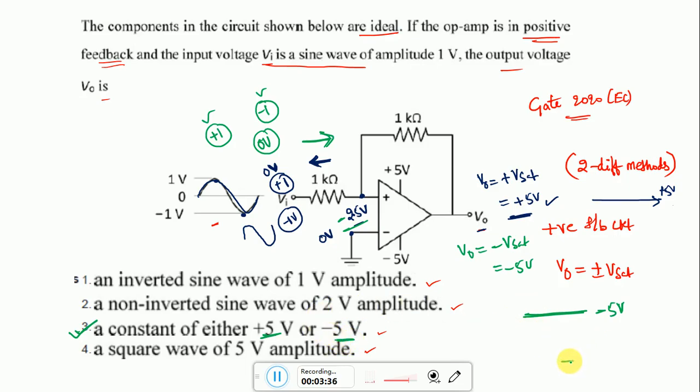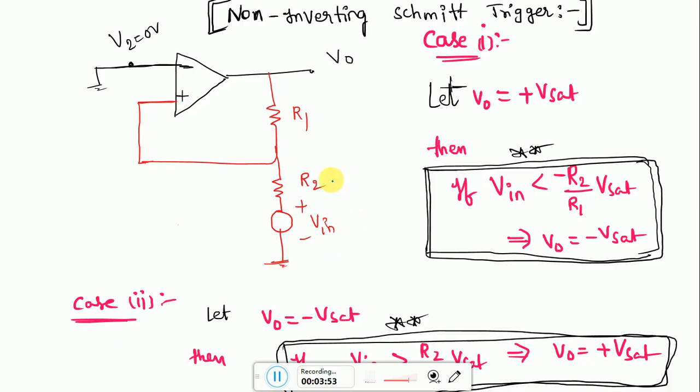After looking at the question, it is given as positive feedback circuit right. So everyone will go with this option, that is a square wave of 5V amplitude. But the correct answer is, a constant of either plus 5V or minus 5V. There is other way of solving this, that is, this circuit is called as non-inverting Schmitt Trigger circuit.